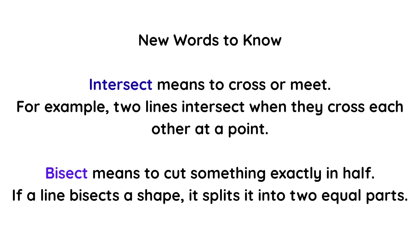New words to know. Intersect means to cross or meet. For example, two lines intersect when they cross each other at a point. Bisect means to cut something exactly in half. If a line bisects a shape, it splits it into two equal parts.